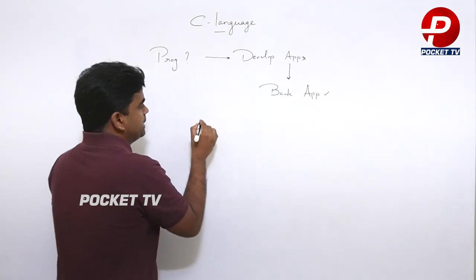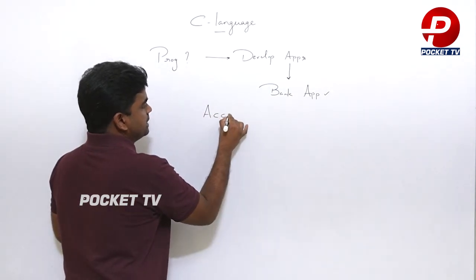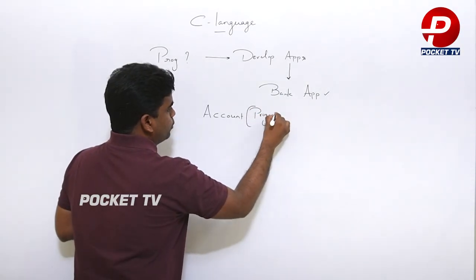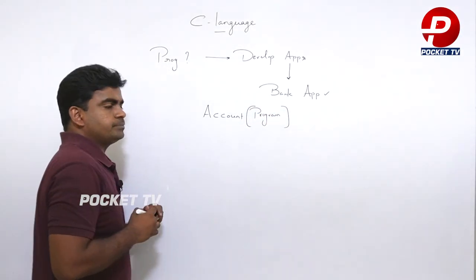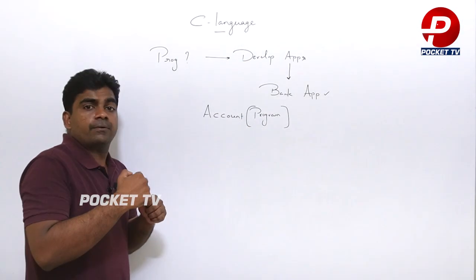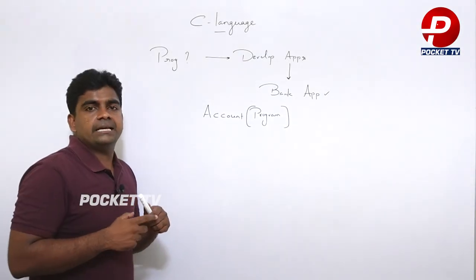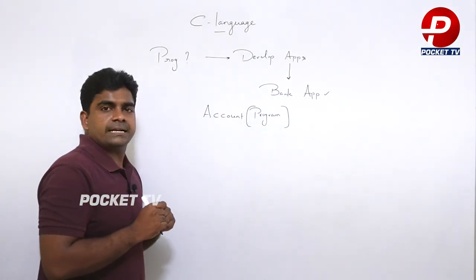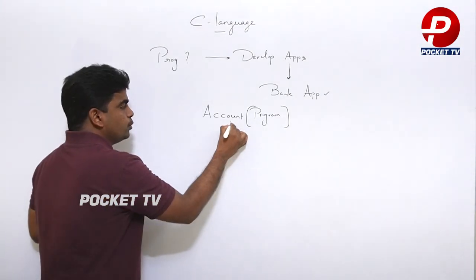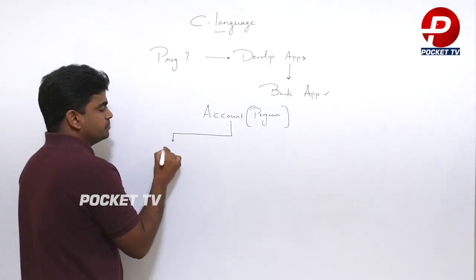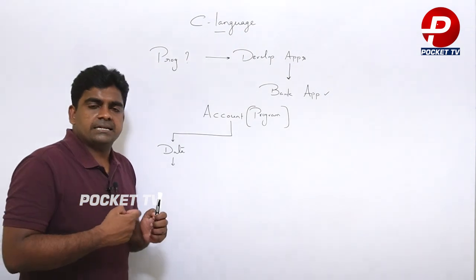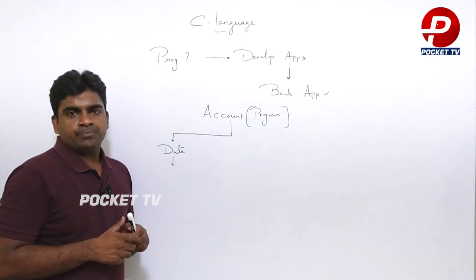Simply put, the banking application's main asset is the account holder. We can consider the account as one program. In programming, we are developing, writing, and designing programs. Every program is responsible for two things only: first, storing the information — the data.